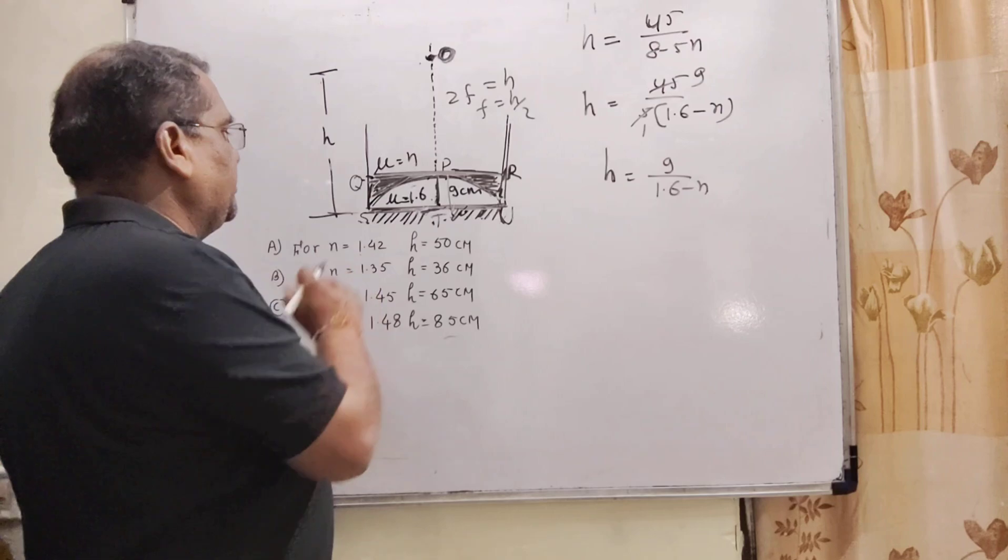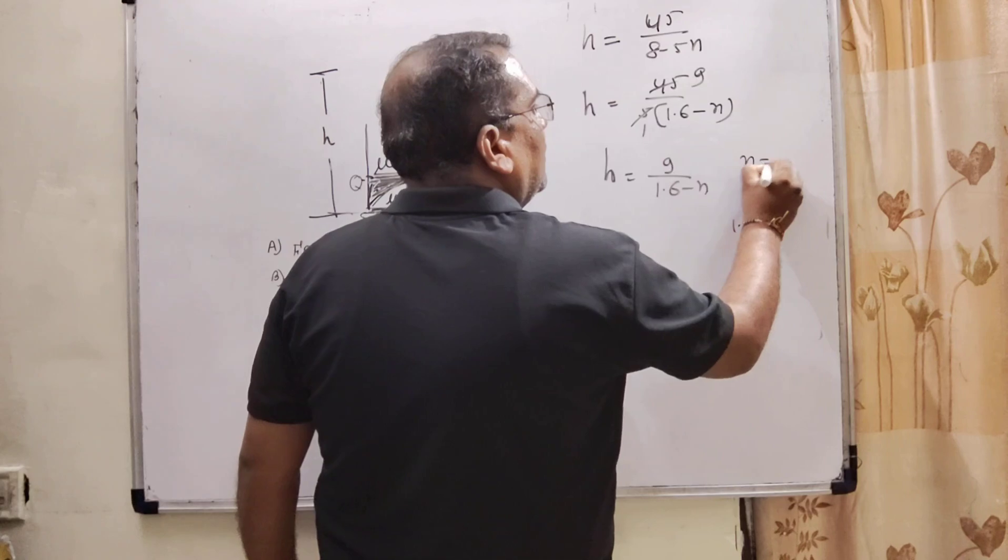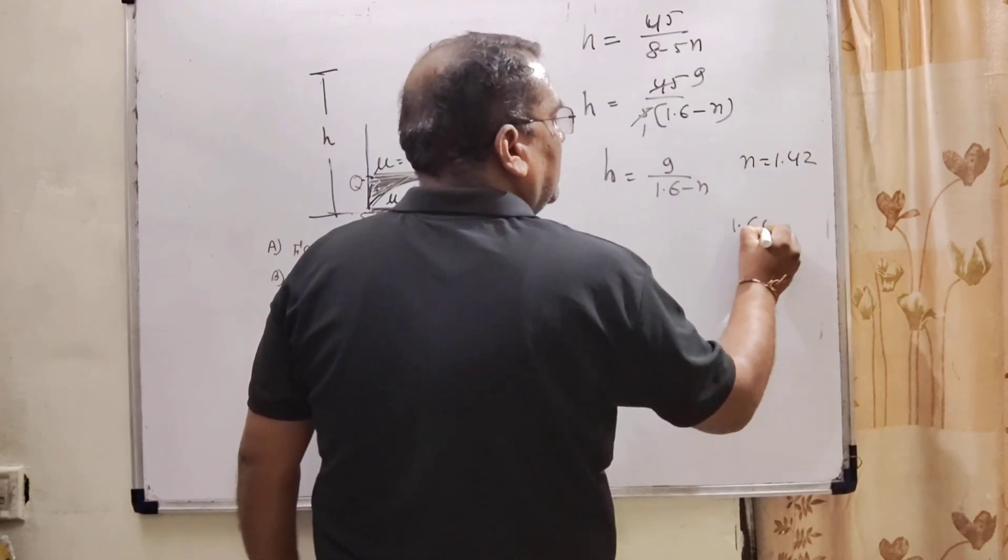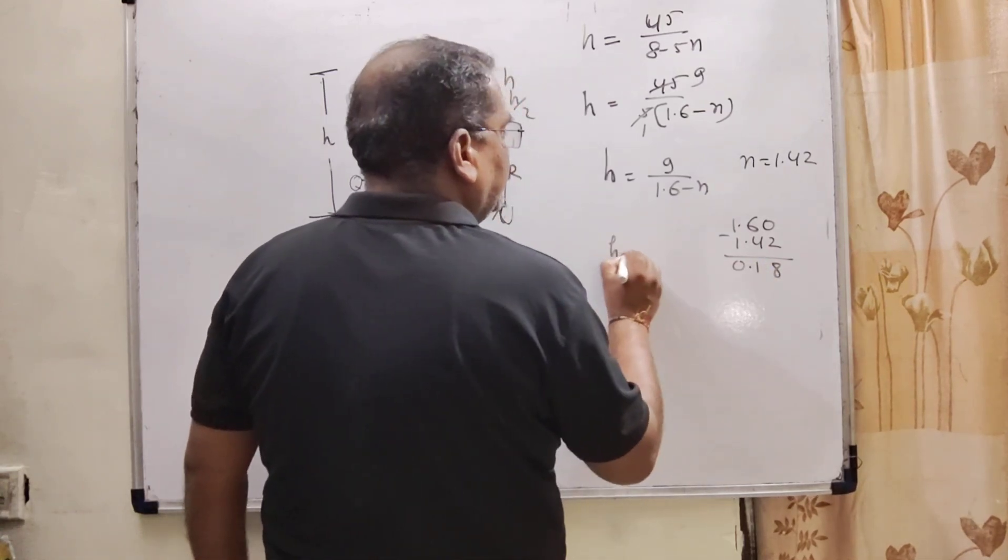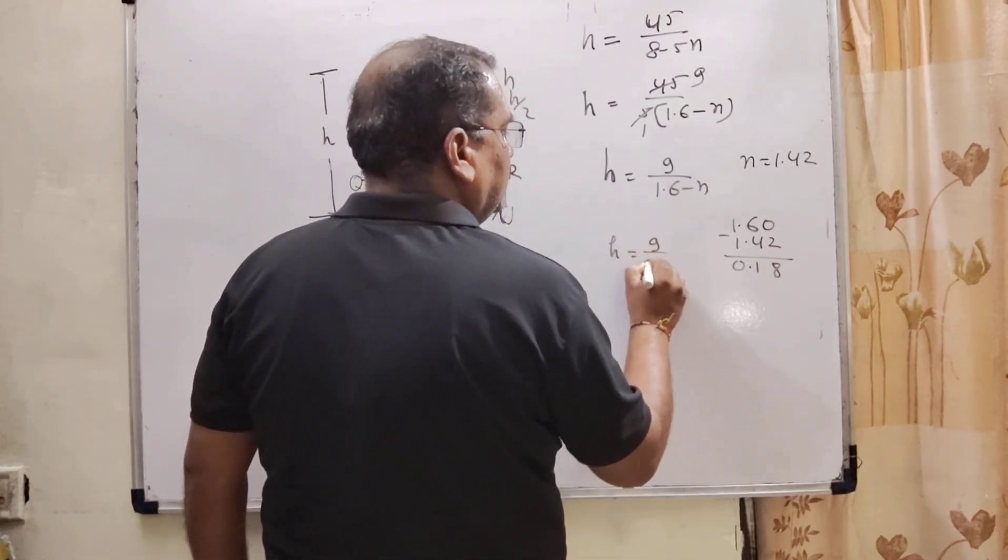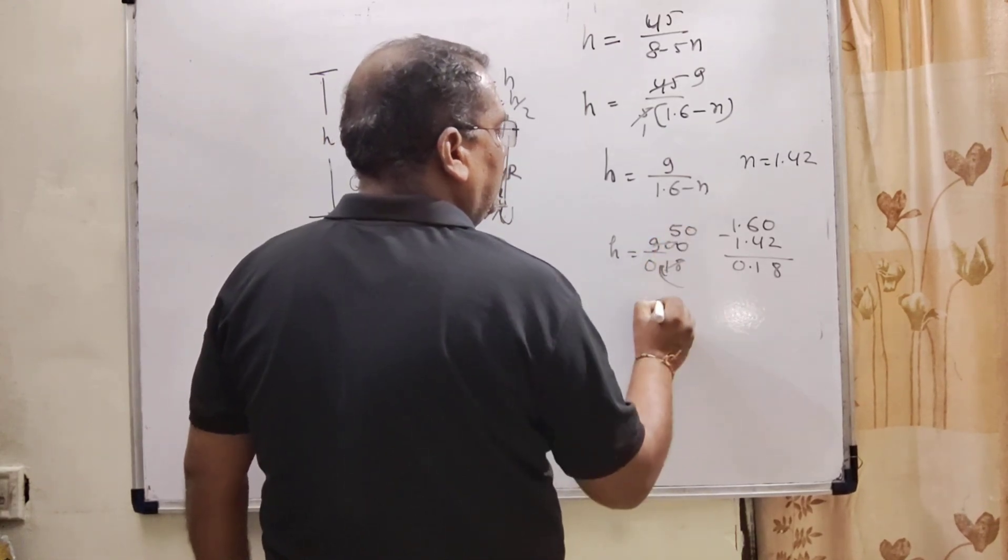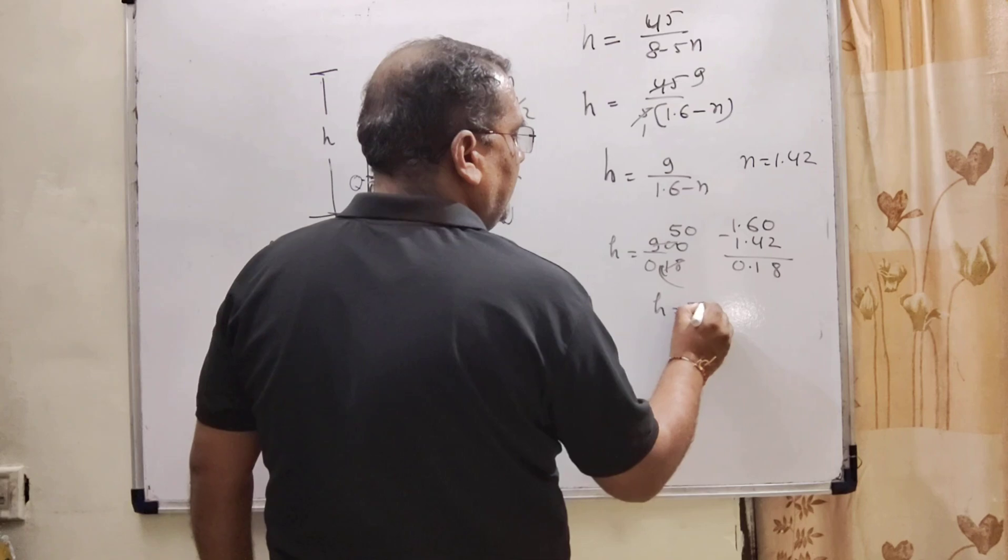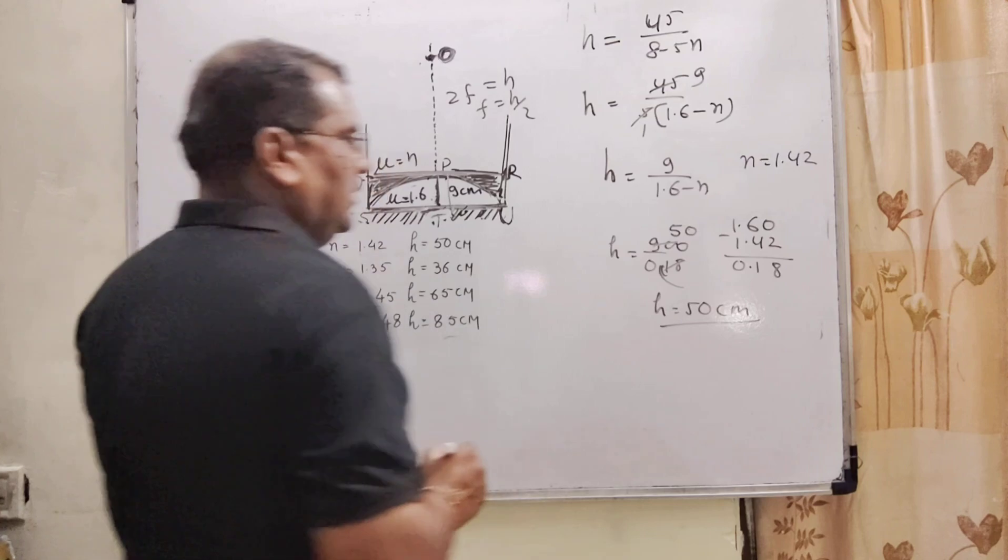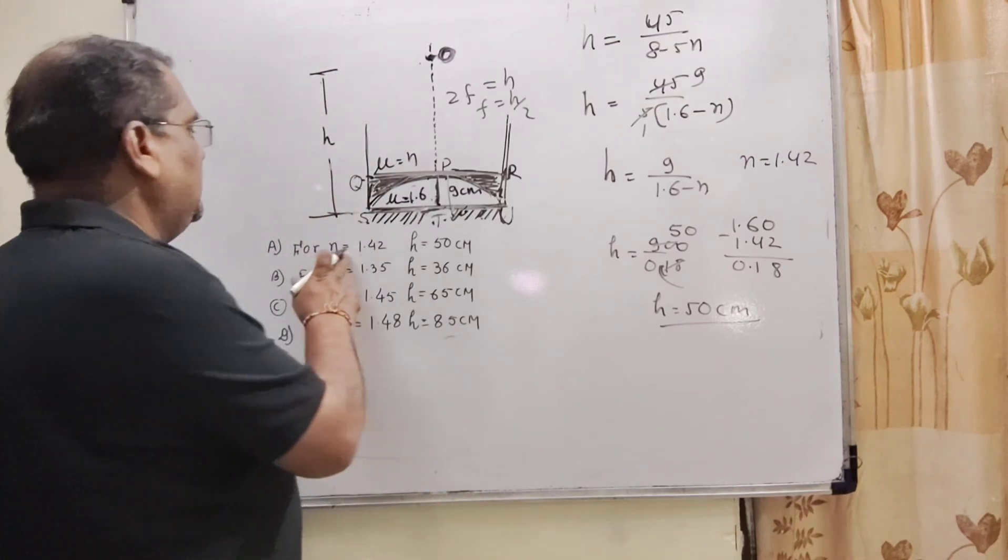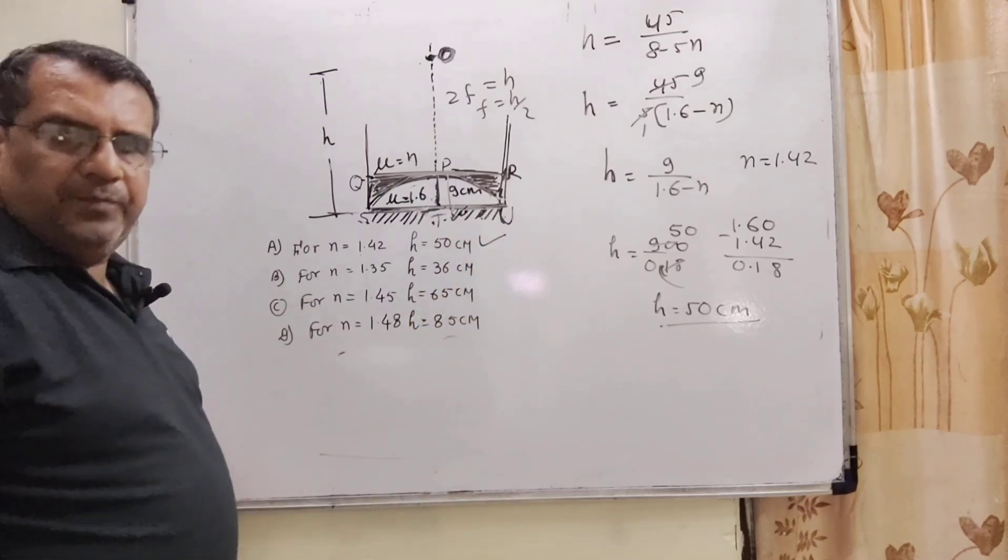Firstly, we substitute n equals 1.42. So h equals 9 upon 1.8 minus 1.42, which is 9 upon 0.38. This gives h equals 50 centimeters. Let's see, n equals 1.42 and h equals 50, so our first option is correct.